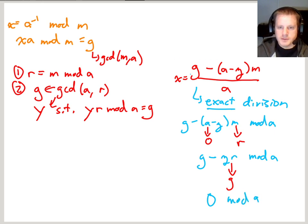But what have we just proven is that the numerator here in this expression for x, the numerator is always divisible by A. So that's why we know that the division is an exact division.